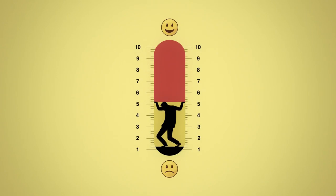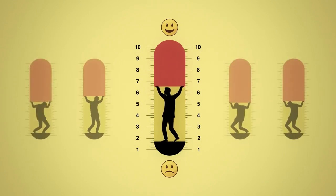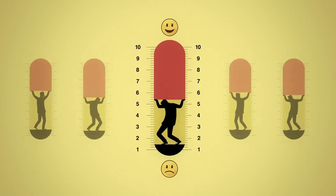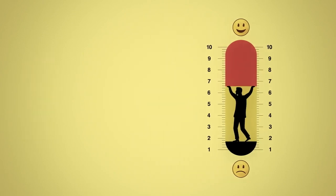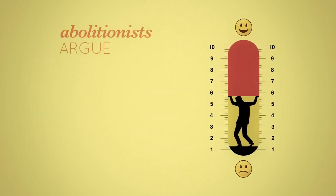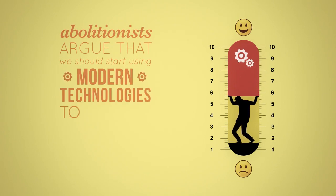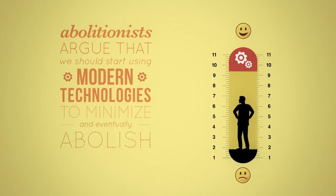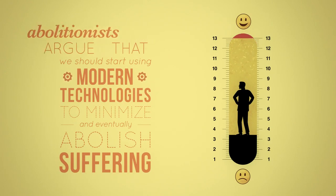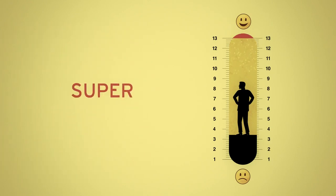Minimizing our suffering and the suffering of those we care about is a crucial part of what drives us. Hence, so-called abolitionists argue that we start using modern technologies to do exactly that: minimize, and eventually abolish, suffering, ushering in an era of so-called super wellbeing.